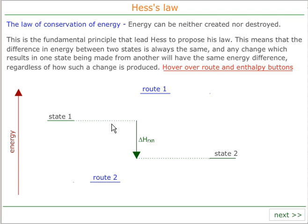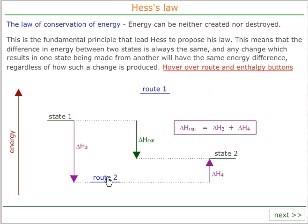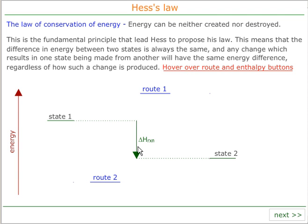If we go via route 2, the sum of delta H3 and delta H4 must also be equal to delta H reaction. We cannot change the difference in energy between two states. So regardless of how we get from state 1 to state 2, the energy change will always be the same.